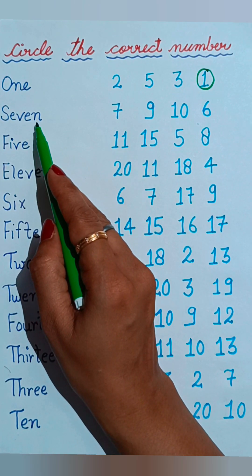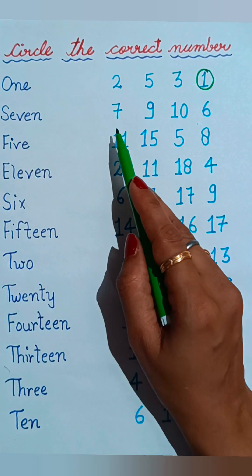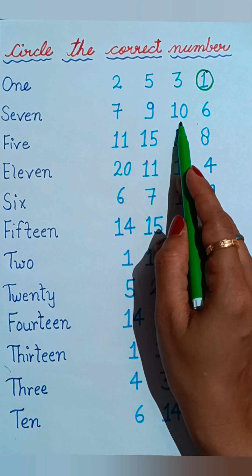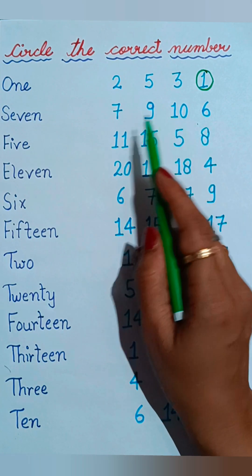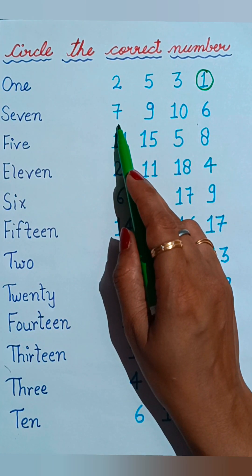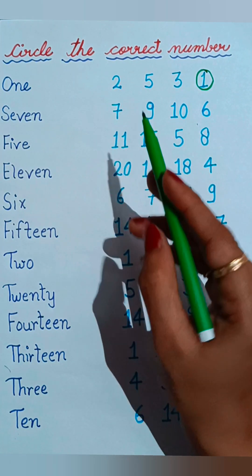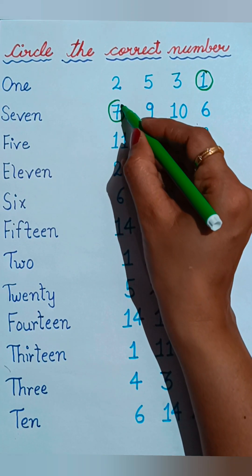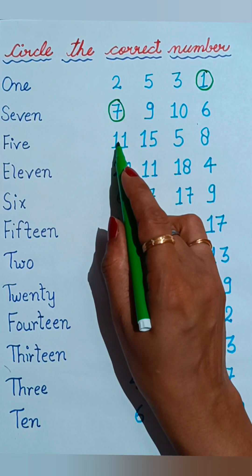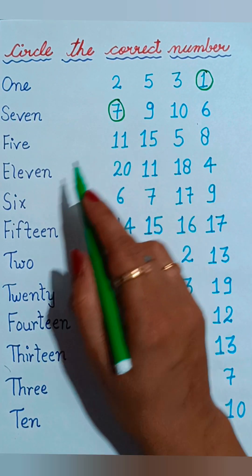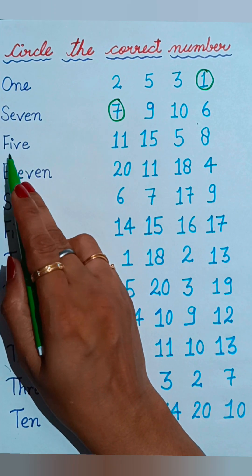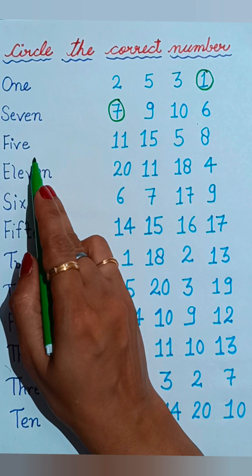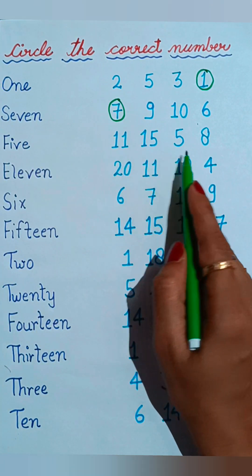See the next one: S-E-V-E-N, seven. Tell me where seven is given. Seven, nine, ten, and six — seven is given at the first number, so we will circle the correct number seven.